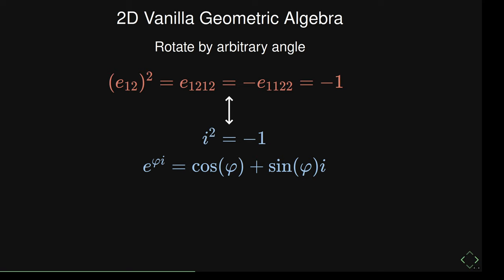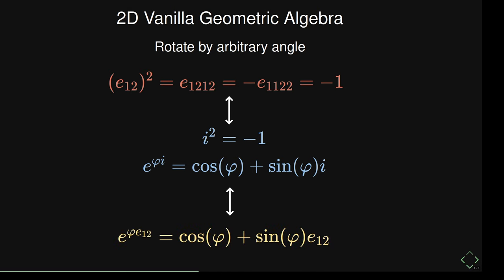Since E12 squares to −1, we can use Euler's formula — which works for any i that squares to −1 — in geometric algebra. Using this formula for E12: e^(φ·E12) gives cosine(φ) + sine(φ)·E12. This can be used to rotate vectors by an arbitrary angle.